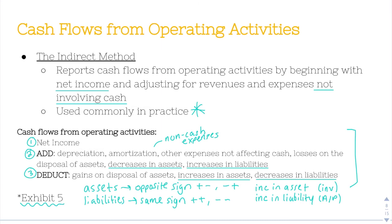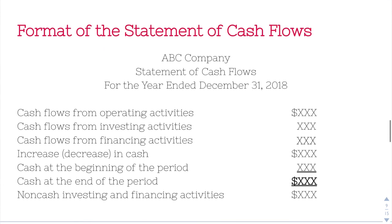I'd be happy to go over it in more detail; I wanted to keep it relatively simple here because it's not going to be tested super heavily. Now, format of the statement of cash flows — not super important but good to be familiar with. You would have first your cash flows from operating activities, then investing activities, then financing activities. You get your increase or decrease in cash, add the cash at the beginning of the period, and that gives you cash at the end of the period. At the bottom you also have non-cash investing and financing activities.